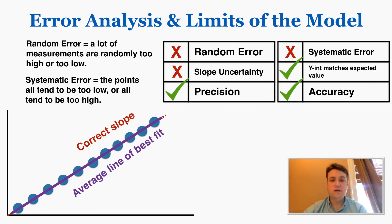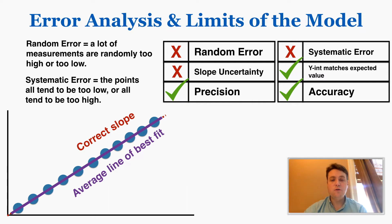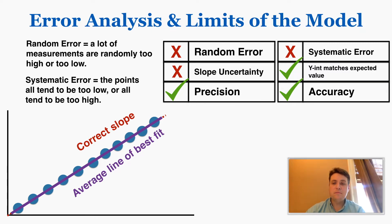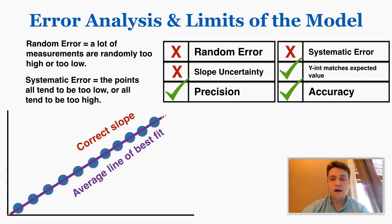If there's no random error and no slope uncertainty, there is precision. If there is random error and slope uncertainty, there's no precision. These things always follow from each other. Similarly, if there's no systematic error, your y-intercept and slope should match the expected result and you should have accuracy. If there is systematic error, the y-intercept and slope do not match the true result and you do not have accuracy.